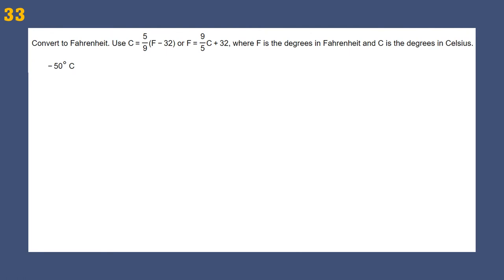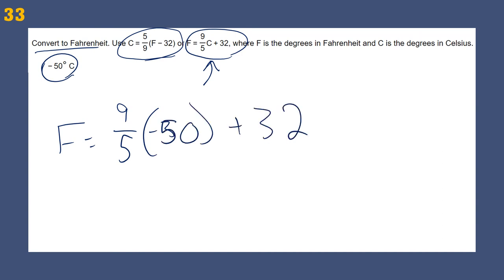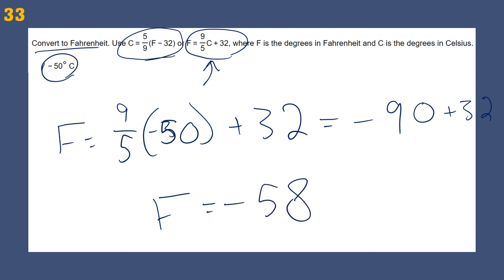Another temperature conversion — this formula is written slightly differently but is the same. Given Celsius of negative 50, convert to Fahrenheit: F equals (9 over 5) times Celsius plus 32. Plugging in: (9/5) times negative 50 plus 32 equals negative 90 plus 32 equals negative 58 degrees Fahrenheit.